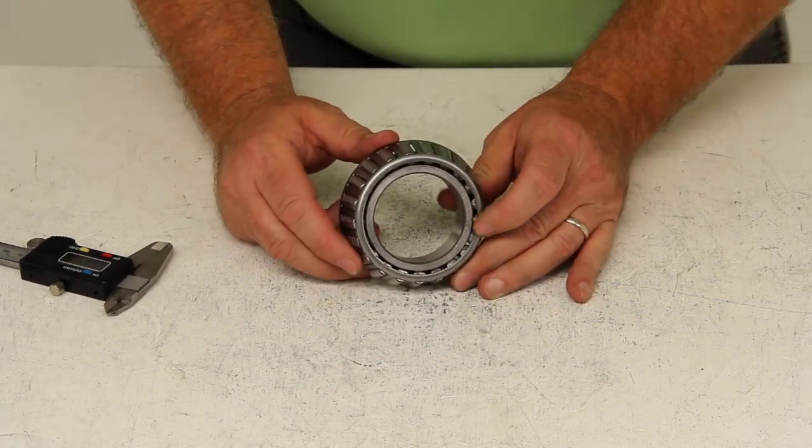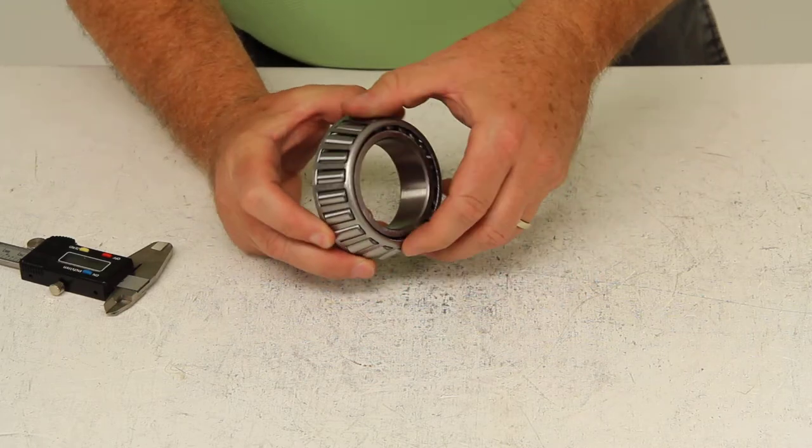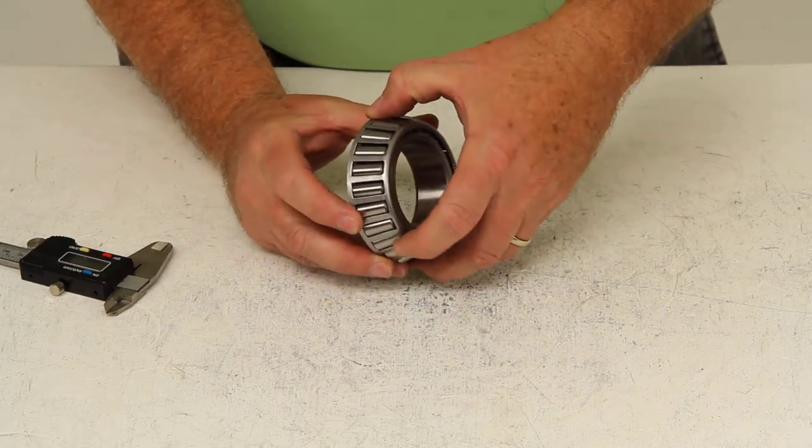Today we're going to review part number 28580. This is the Redline trailer inner wheel bearing.